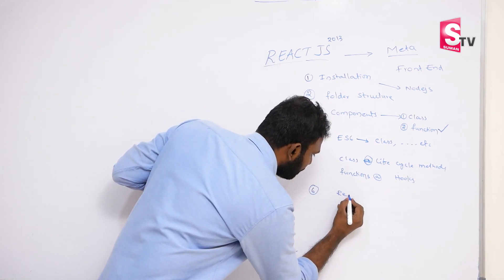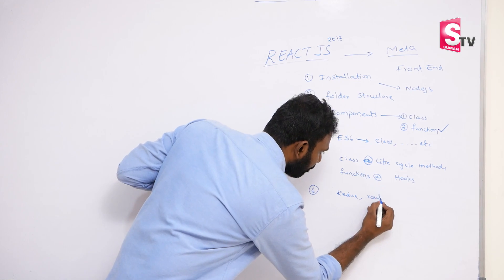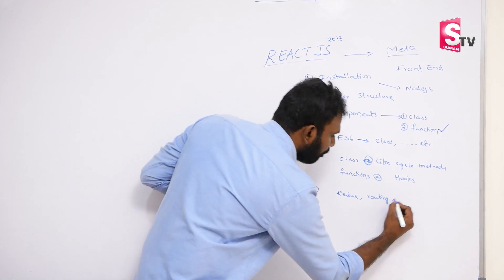Next we need Redux, we need routing, and we need form validation.